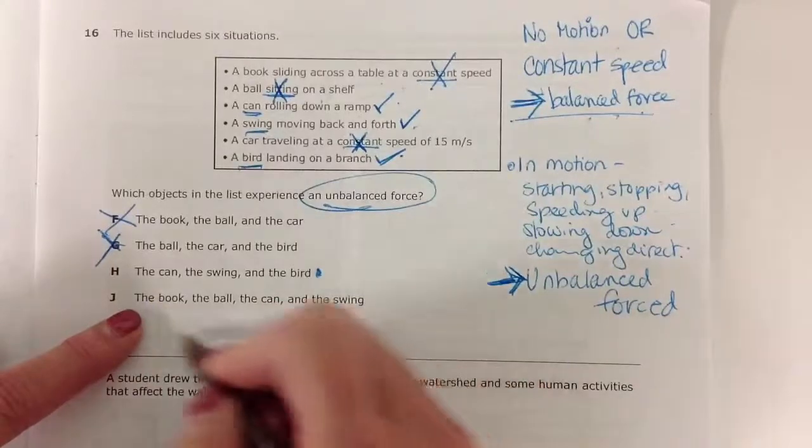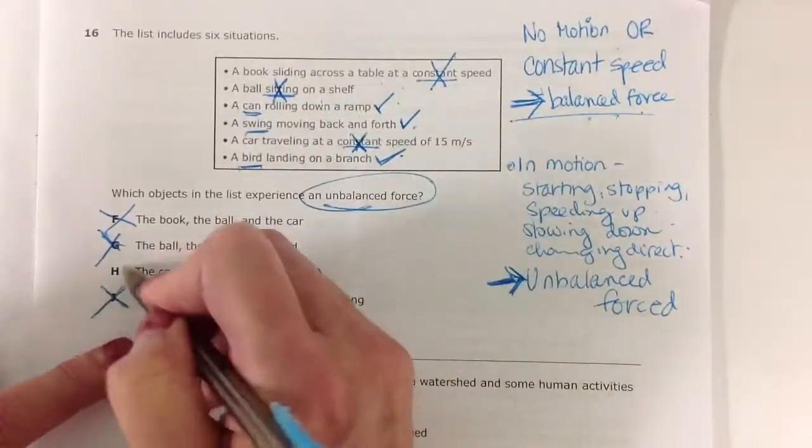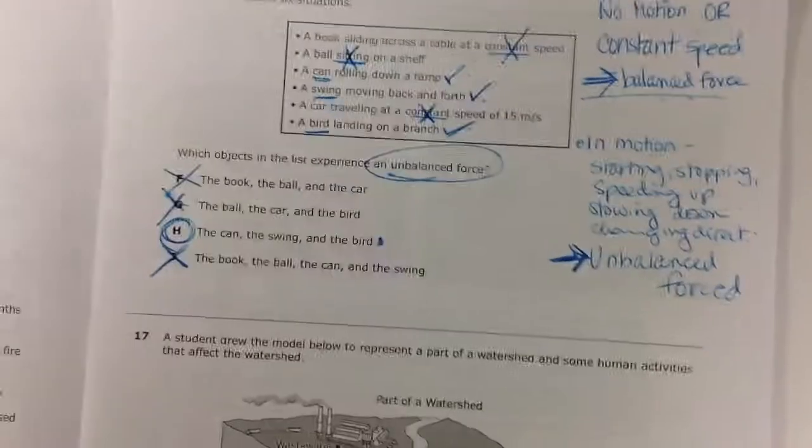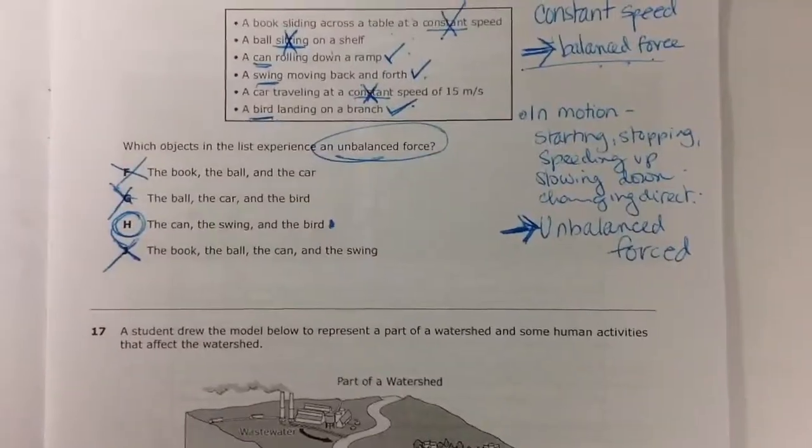The book, the ball, nope. The book, constant speed. So our answer choice is answer choice H.